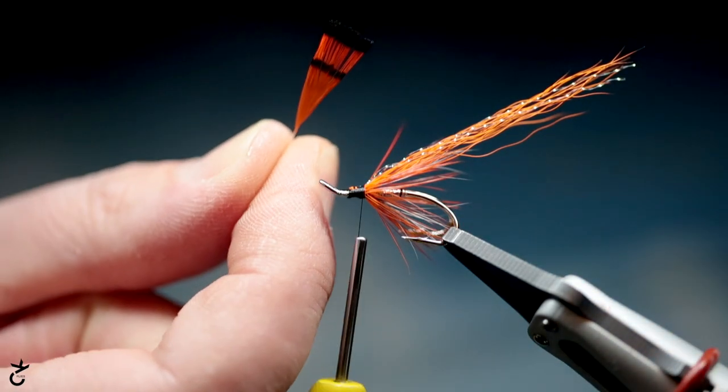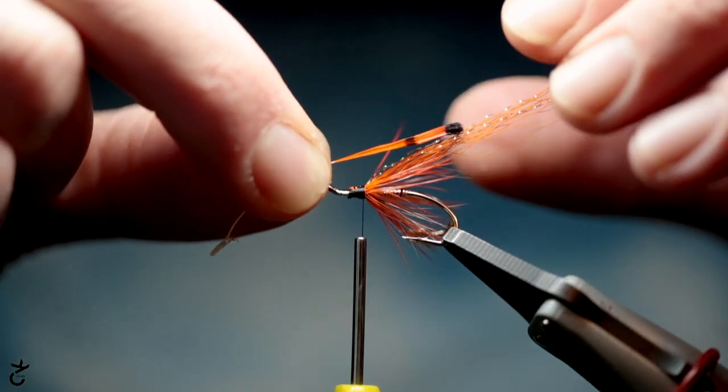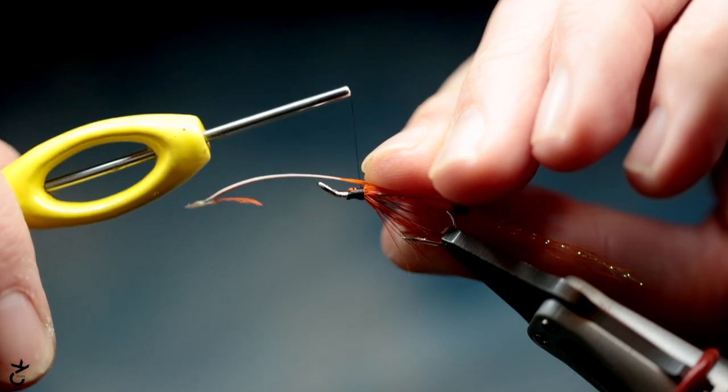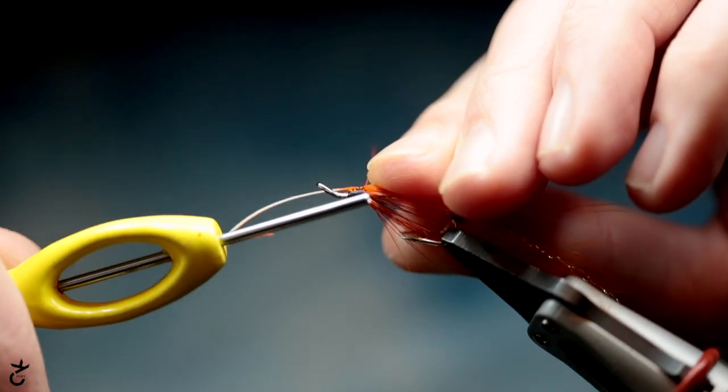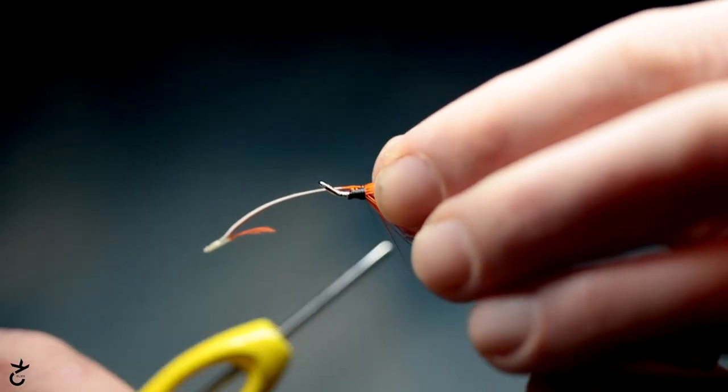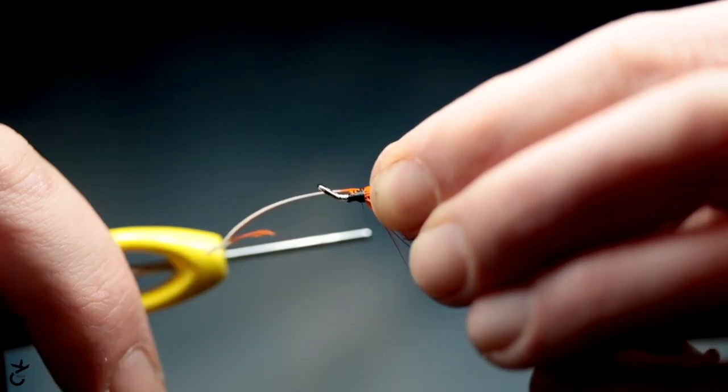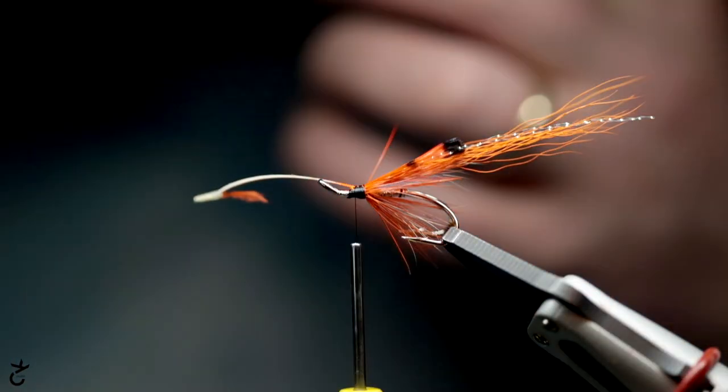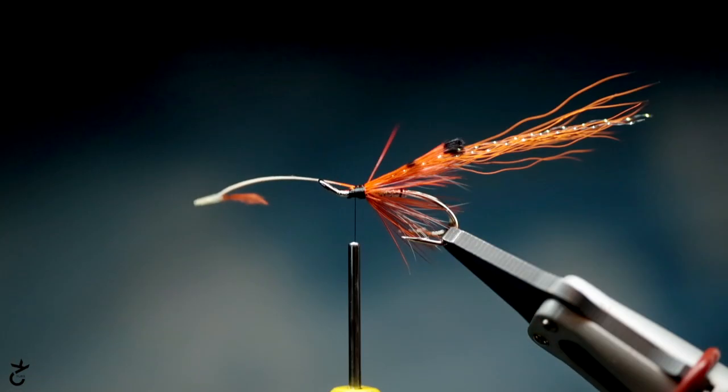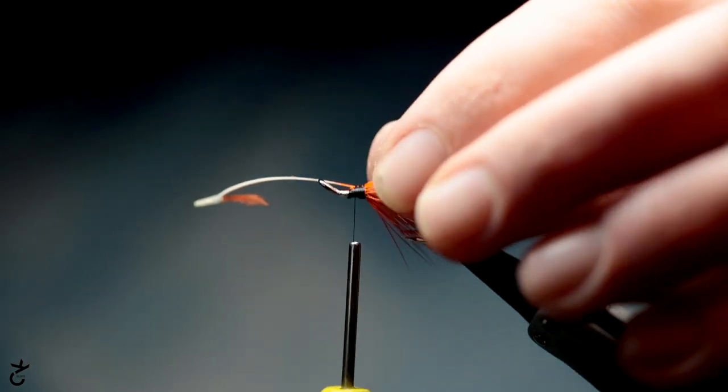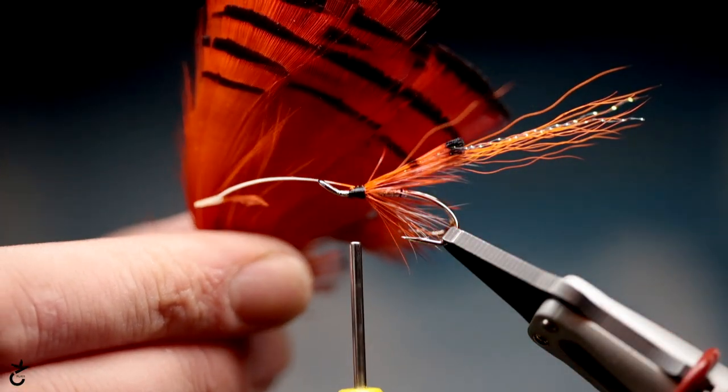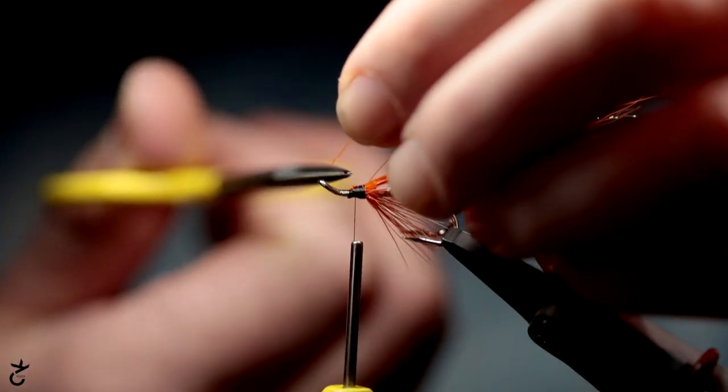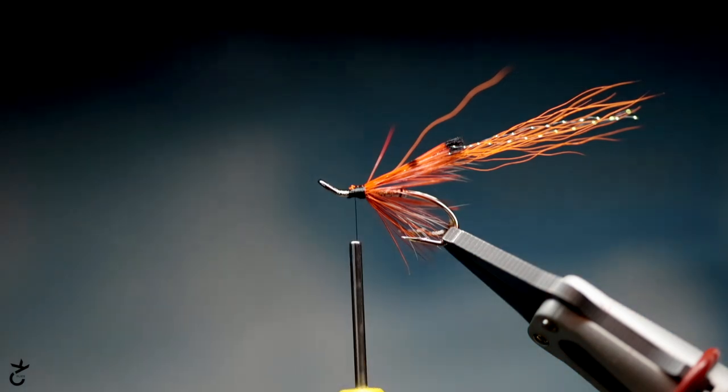Now I'm going to take a bit of orange pheasant here and just pop that over there. I kind of want this to flare a bit. It's great stuff, really nice dyed hot orange, this from André at AM Fly Tying.